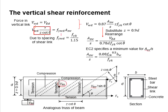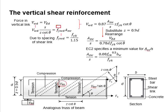This is equated with the resistance of the shear link, which is a function of the specified yield strength of the shear link times the effective area of the shear link.